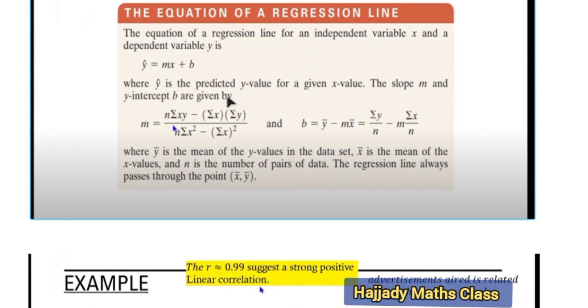Where y cap is the predicted y value for a given x value. The slope m represents the slope, and the y intercept b are given as this. So this is the formula for calculating the slope, and this is the formula for calculating b.